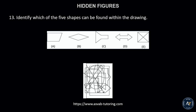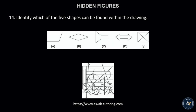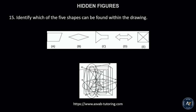Number 13. Identify which of the five shapes can be found within the drawing. The correct answer is letter C. Number 14. Identify which of the five shapes can be found within the drawing. The correct answer is letter A. Number 15. Identify which of the five shapes can be found within the drawing. The correct answer is letter D.